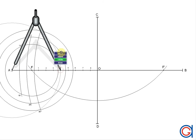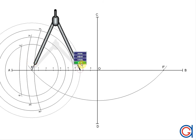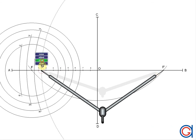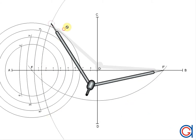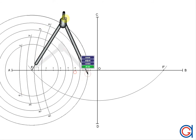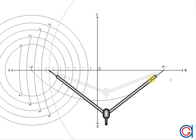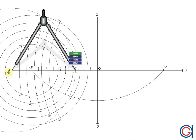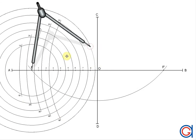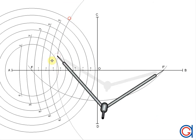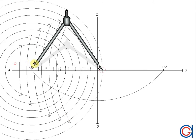We are going to repeat this process with all of the points. We are going to speed up the video so that you don't get bored at home. We mark our points 5A and 5B. So now, we have all the points of the left side of the ellipse that we are going to draw.